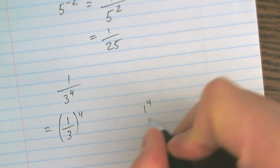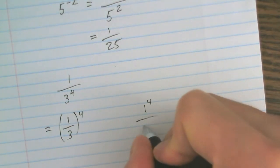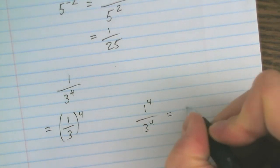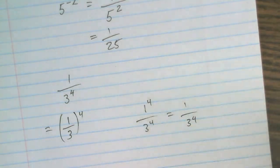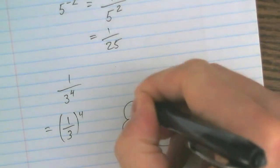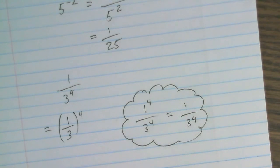1 over 3 to the power of 4, which is 1 to the power of 4 over 3 to the power of 4, and 3 to the power of 4 is equal to what we started with.